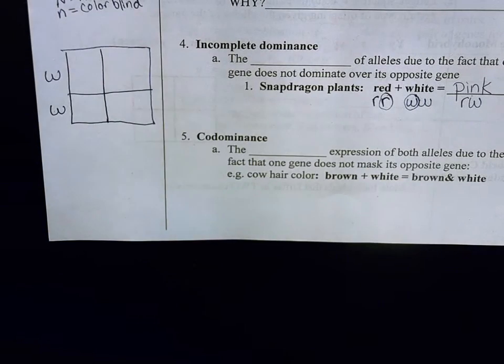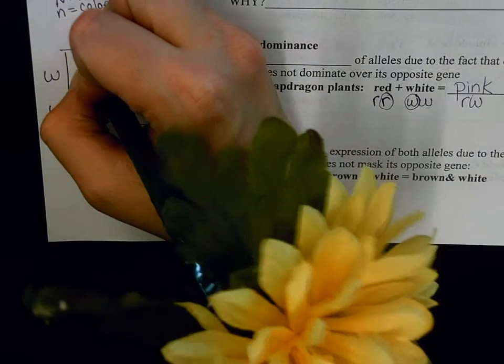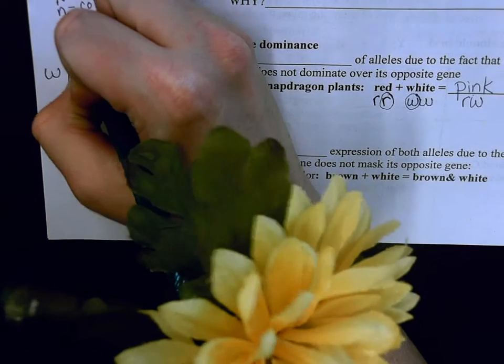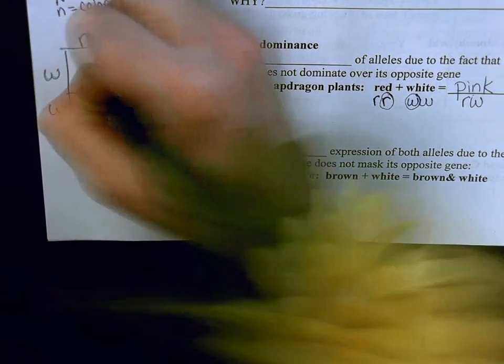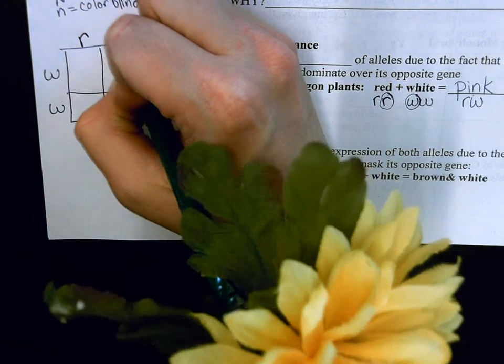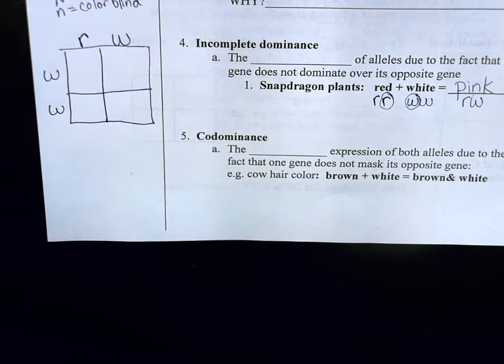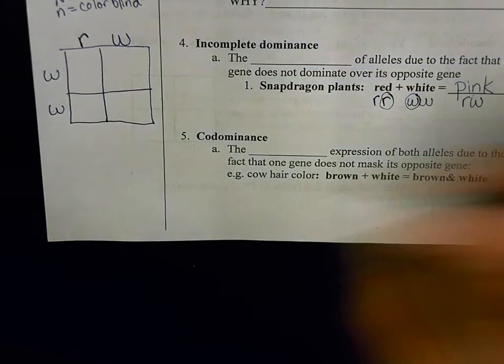Little w. And if it mates with a pink flower, that pink flower can only be created by inheriting a little r and a little w — a red and a white combining to make pink.